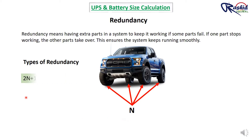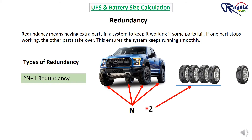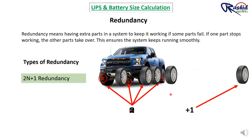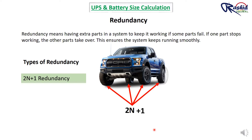The third type is 2N+1 redundancy: a complete duplicate of all components plus one additional spare. For a car, this means two complete sets of 4 tires plus one extra spare — 9 tires total. If all primary tires fail the secondary set takes over, and if one of those also fails, the spare tire covers it, ensuring continuous operation.